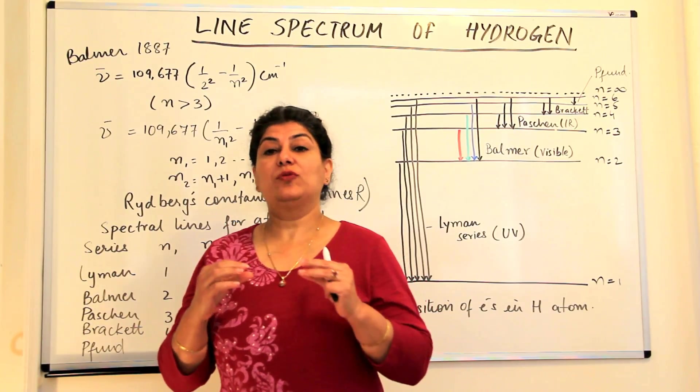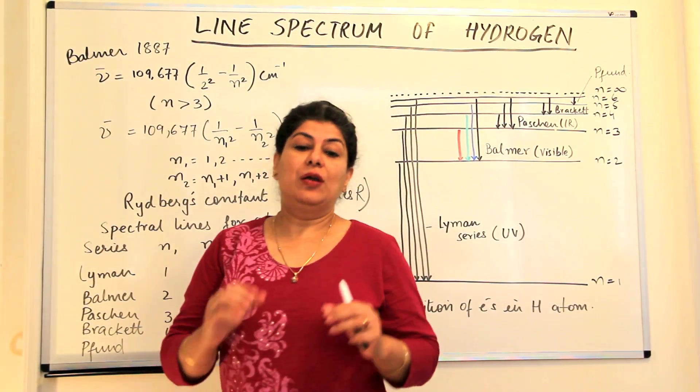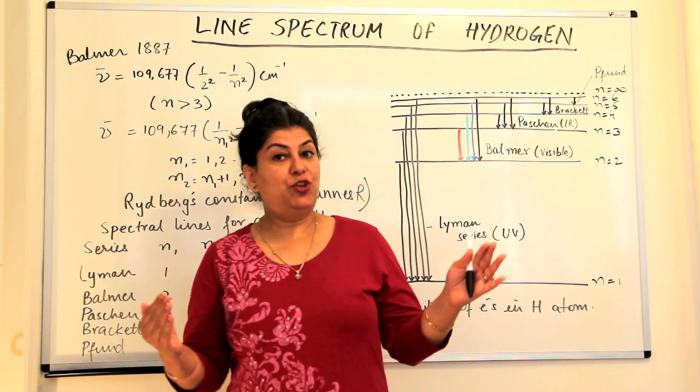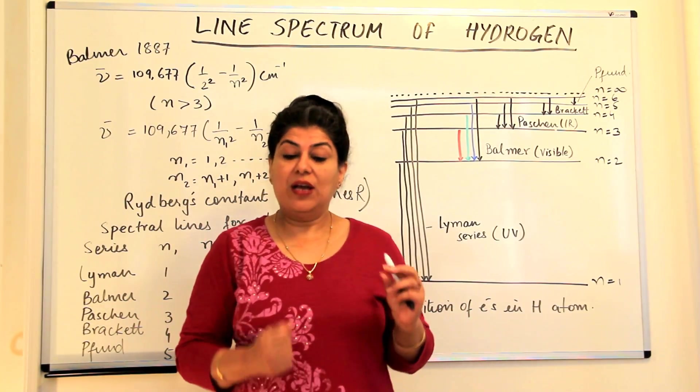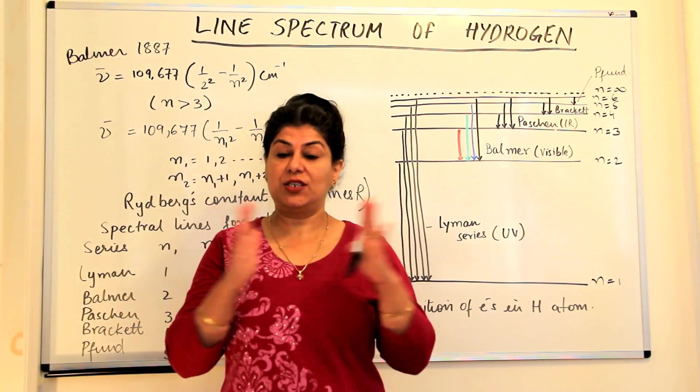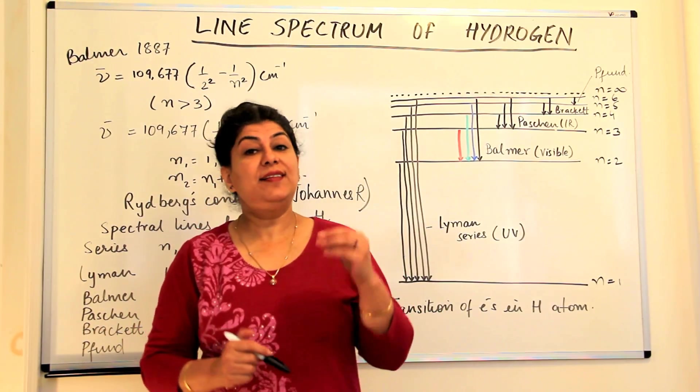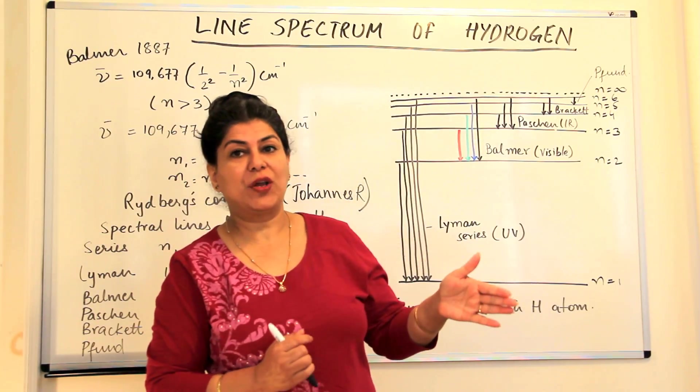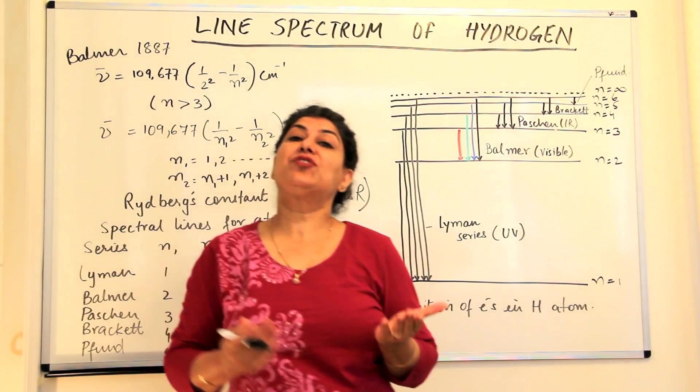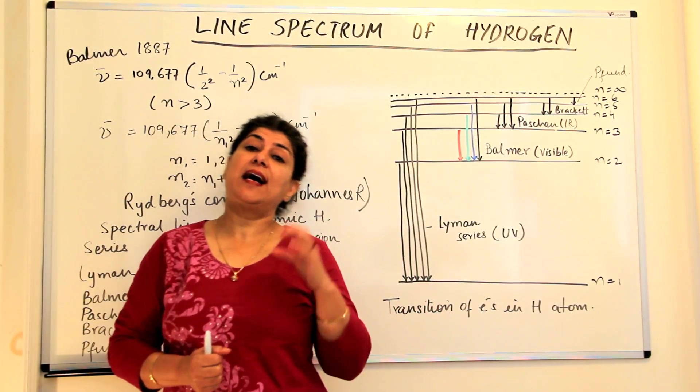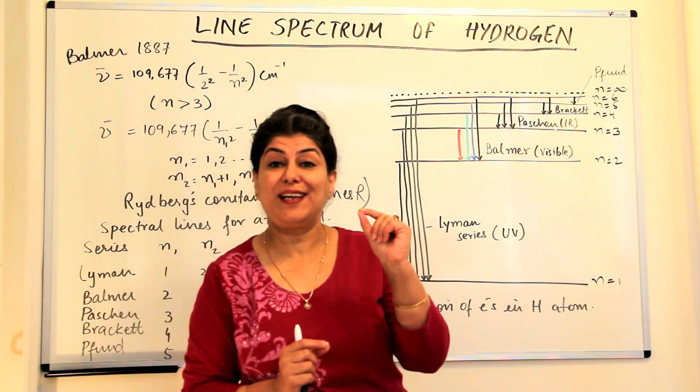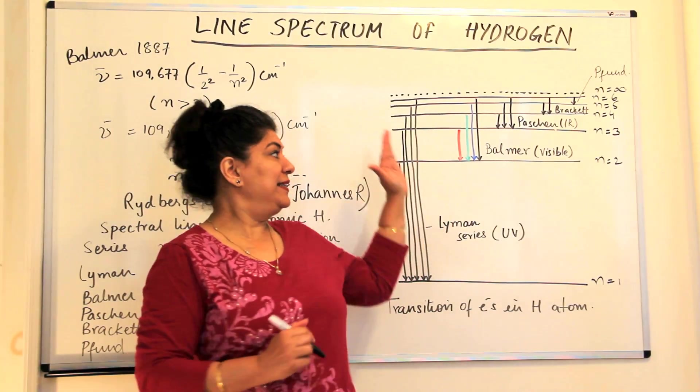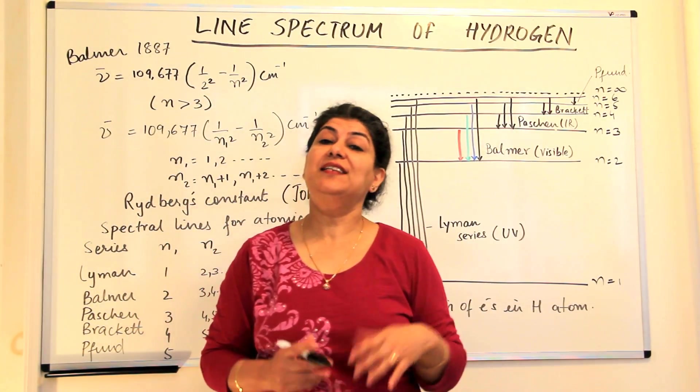Balmer was a scientist who proposed a formula. He said that when you pass electric discharge through hydrogen molecules with high voltage, the hydrogen molecules dissociate and turn into hydrogen atoms. These hydrogen atoms absorb energy, and when they release this energy, the spectrum is recorded and we get lines in the hydrogen spectrum. These lines are characteristic. We know that hydrogen has only one electron, so you would expect only one line perhaps, but we find that there's a series of lines obtained in the case of hydrogen.